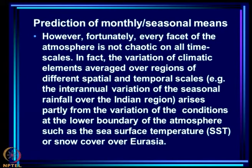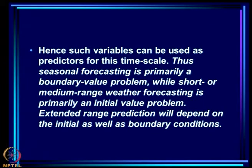The variation of ISMR arises partly from variation of conditions at the lower boundary of the atmosphere such as sea surface temperature or snow cover over Eurasia. Part of the variation is driven by boundary forcing — SST when the atmosphere is over the ocean, or snow cover and land surface conditions. Hence such variables can be used as predictors. Thus seasonal forecasting is primarily a boundary value problem, while short- or medium-range weather forecasting is primarily an initial value problem. Extended-range prediction lies between and depends on both initial and boundary conditions.